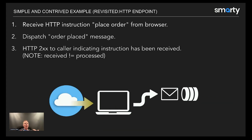Let's go through our contrived example again. We receive an instruction from the browser to place an order. Our server processes it and we put a message on the queue — step two: we dispatch an 'order placed' message. Just because we returned an HTTP 200-level response to the caller doesn't mean we've processed and agreed with the order.